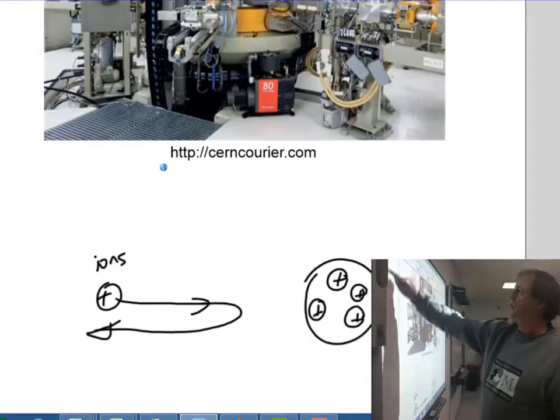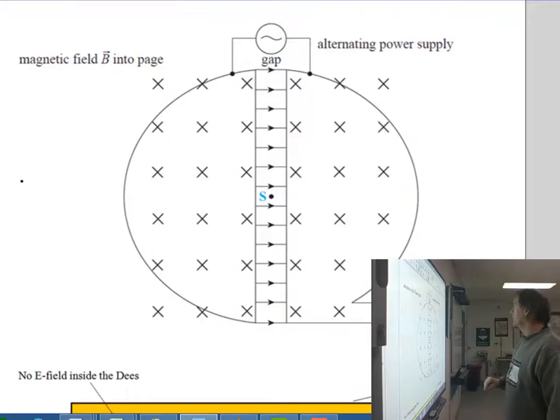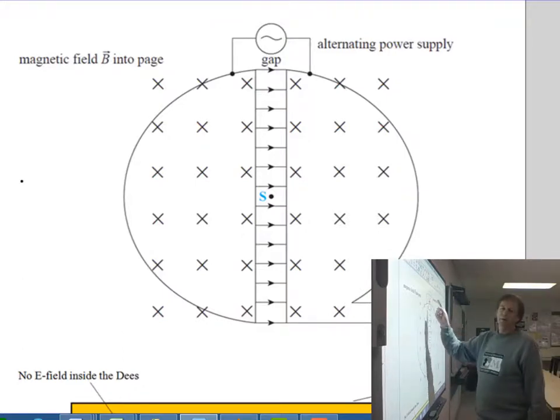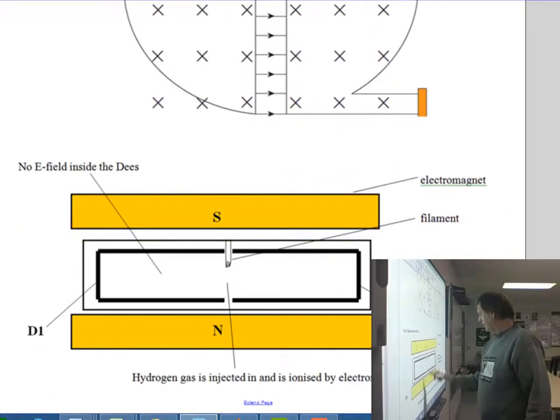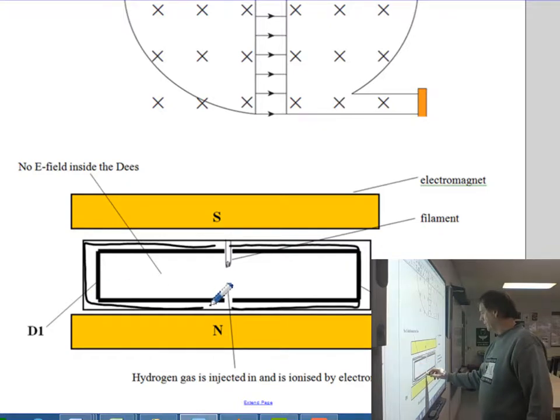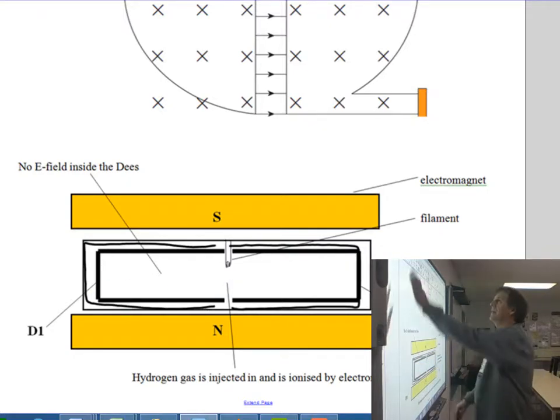So the one we're focusing on in the course is the cyclotron. If you look at the cyclotron here, it's actually made up of two Ds there which are copper electrodes. They're hollowed out. If you look at them in cross-section, they're like this. So the D here is like that, there's your D, and there's a D on the other side, which is backwards.